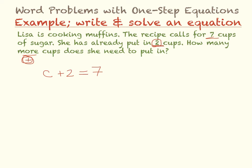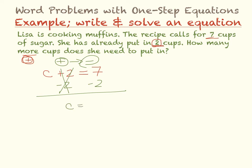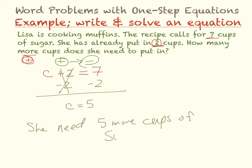So now I solve this equation: C plus 2 equals 7. The opposite of plus 2 is minus, so I'm going to subtract 2 from both sides. The 2's cancel, leaving me with C equals 7 minus 2, which is 5. So that means she needs 5 more cups. And that is your final answer.